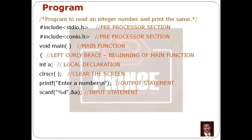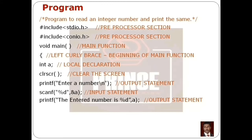After the printf prompt, we use scanf to read the integer. We use %d as the format specifier for integers in the control string. We add the address-of operator and variable name A to store the scanned value. Then we print the integer number using printf with %d and variable A.